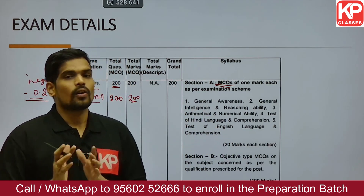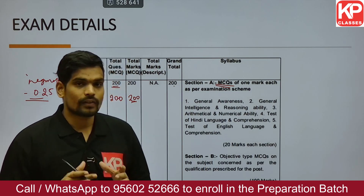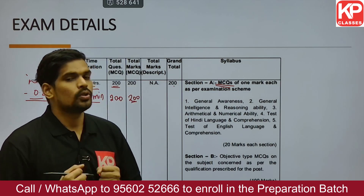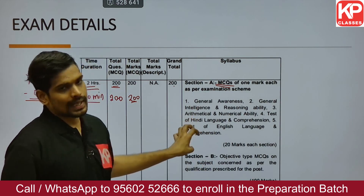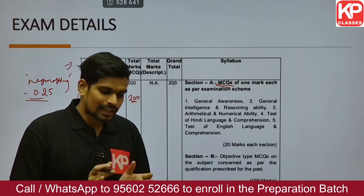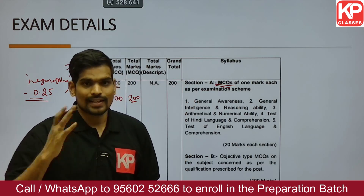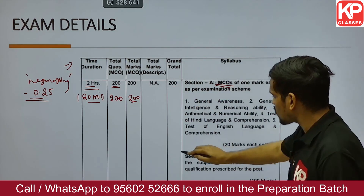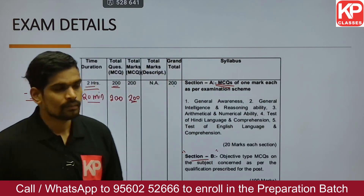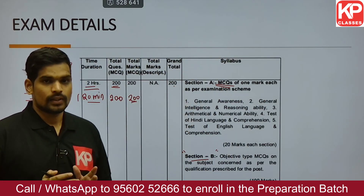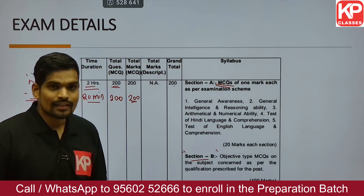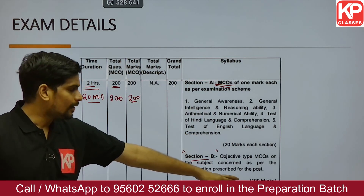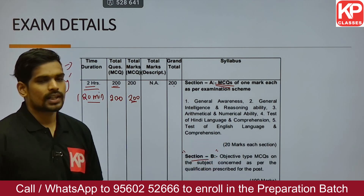Even if you feel you are not strong in one subject — for example, English or Hindi — don't let that pull you back from applying. Each subject has only 20 marks of weightage, which is just 10 percent of the total 200 questions. You can still perform well in the other parts. If you meet the eligibility criteria, you should apply. As for Section B, that will be the core architecture section and carries equal importance — 50 percent of the total weightage.